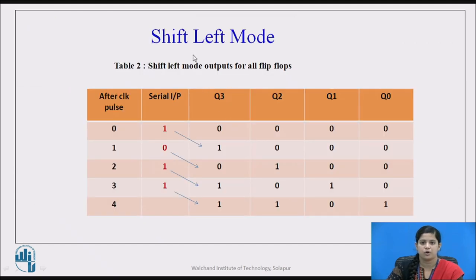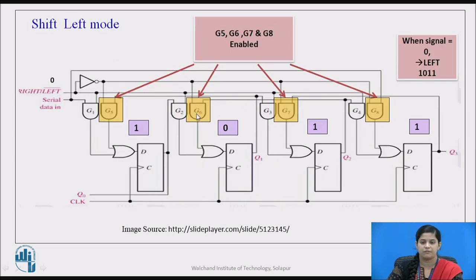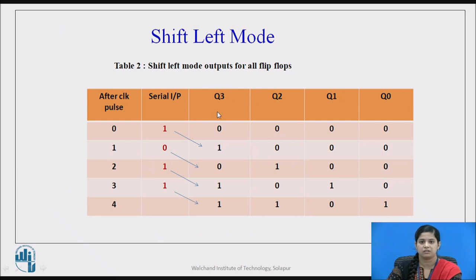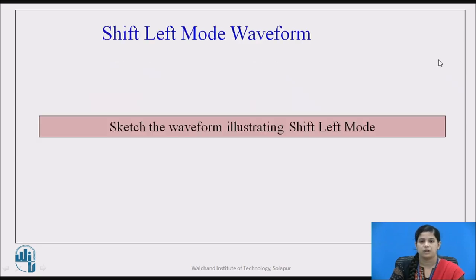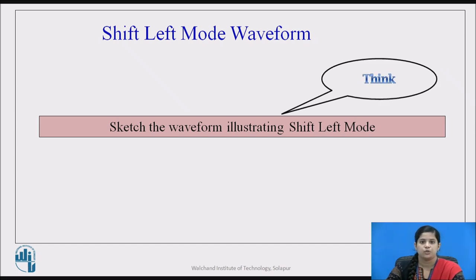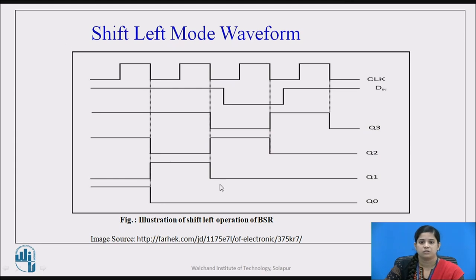This is the tabular form of left shift mode according to the clock pulses and serial input. We select Q3 first since we move from right to left, and from Q3 down to Q0 we can show the tabular form. Please pause the video and sketch the waveform illustrating shift left mode. Welcome back — the illustration of shift left mode of BSR can be shown like this. I hope your answer is similar to this.